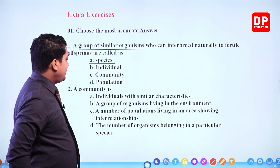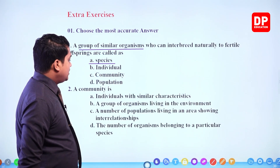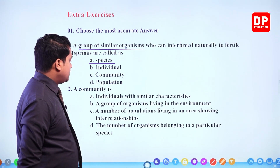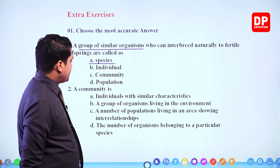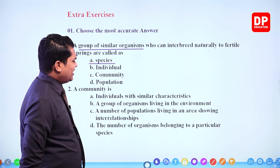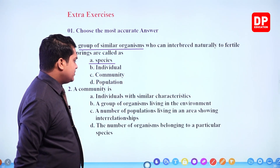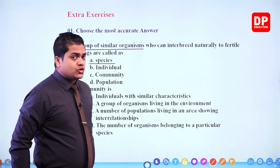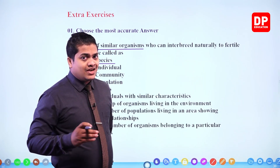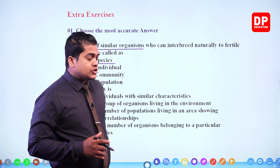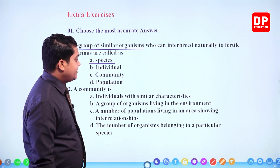Next one: a community is — (a) individuals with similar characteristics, (b) group of organisms living in the environment, (c) number of populations living in an area showing interrelationships, (d) number of organisms belonging to a particular species. 'Number of organisms belonging to a particular species' means a population. A community means several groups of organisms living in a particular area showing relationships between different organisms. So the answer is: number of populations living in an area showing interrelationships.